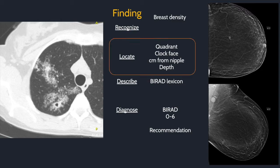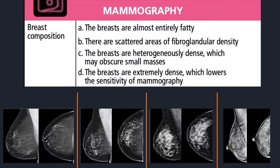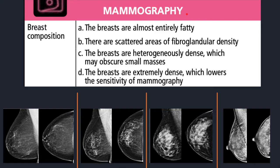Much of this information comes from the BI-RADS manual itself, which is referenced at the end. To start, for any mammogram, you have to designate a breast density from fatty to scattered, heterogeneously dense, and extremely dense, shown in this order.